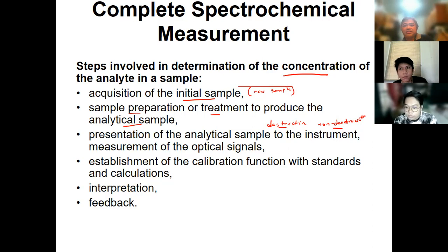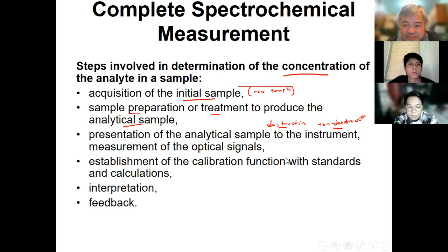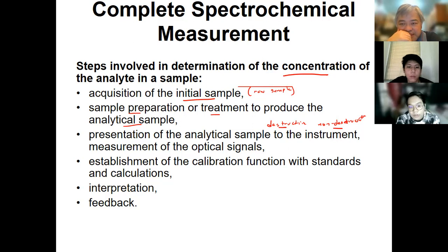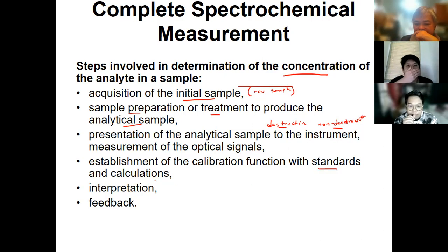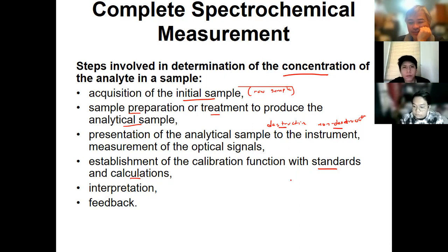Either you input the sample through an aspirator or nebulizer going into the AAS nebulizer, or you use a cuvette as we'll learn in succeeding chapters. Once we present the sample, the next thing is the use of standards and calculation. Analysis is only possible if we have comparison with standards; without that it's very difficult.